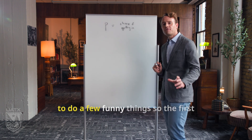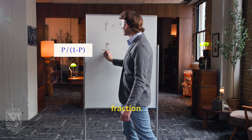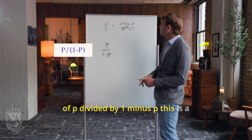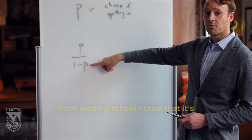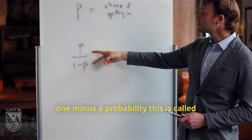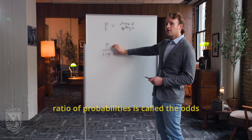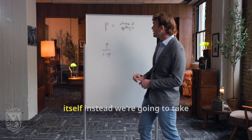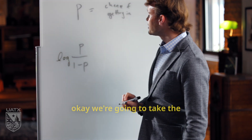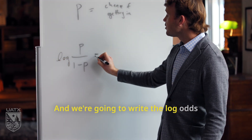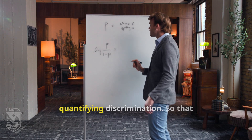The first thing I want to write down is this fraction: P divided by one minus P. This is the chance of getting into medical school divided by the chance of getting rejected — that ratio of probabilities is called the odds. We're actually going to model this, but not the odds itself. Instead, we're going to take the logarithm of the odds — the log odds — as a function of everything I care about in terms of measuring and quantifying discrimination.